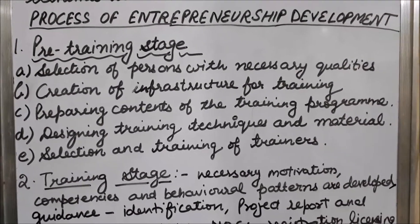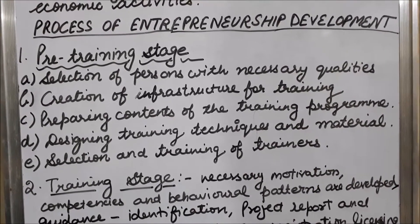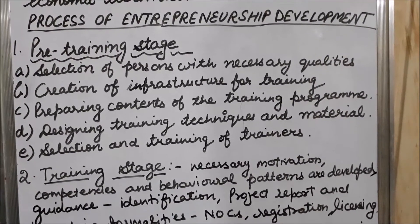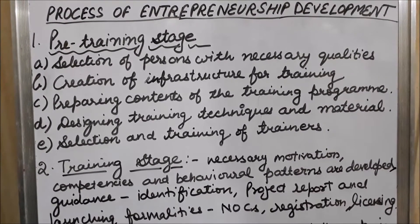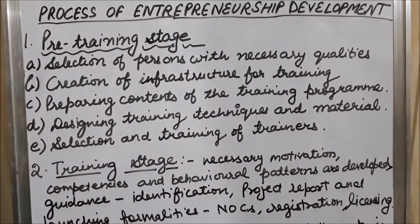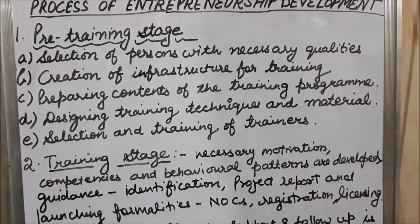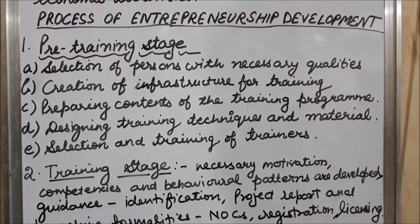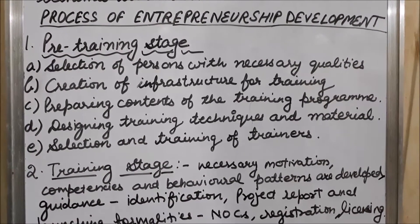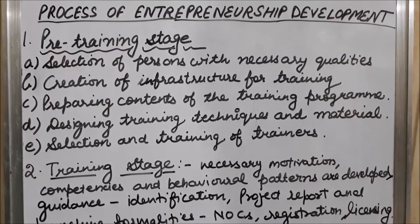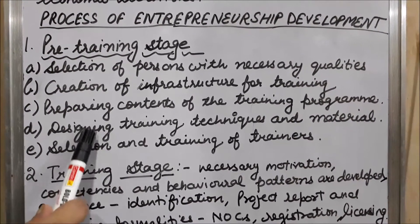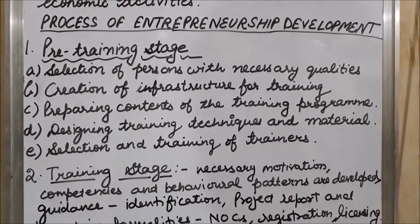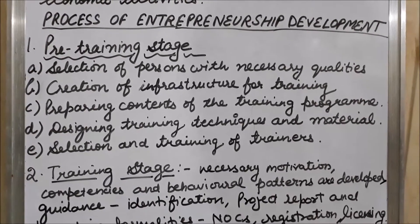From a large number of people, we select persons having the potential to become entrepreneurs — those with necessary qualities in the form of knowledge, values, and motivation. Then, creation of infrastructure for training: we have to arrange a classroom where training is to be given, as well as different types of machines required for training. After that, we prepare the contents of the training program — what training is to be given. Then, designing training techniques and materials — which techniques will be utilized and what material will be required.